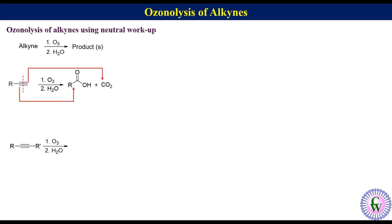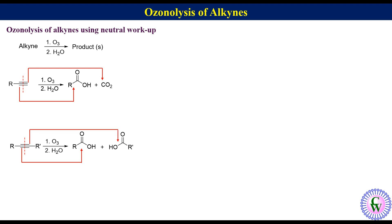When the alkyne is internal, two carboxylic acids are formed. To draw the products, break the molecule into two parts through the C-C bond and convert one alkyne carbon to carboxylic acid to get one product, and the other alkyne carbon to carboxylic acid to get the other product.